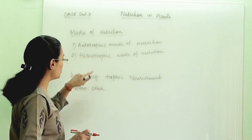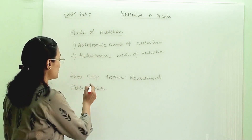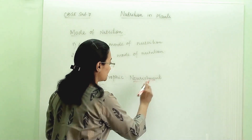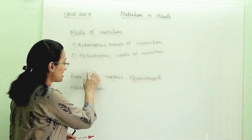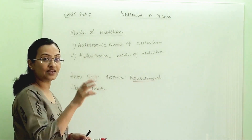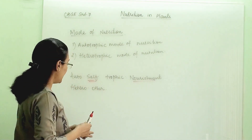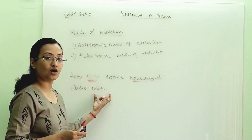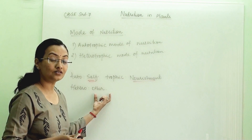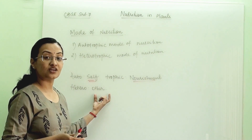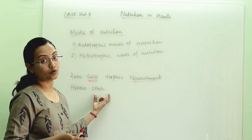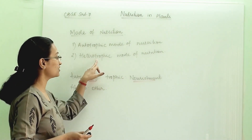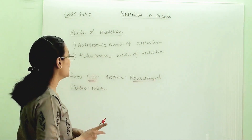Autotrophic mode means 'auto' means self and 'trophic' means nourishment, so they are preparing their own food. Hetero means they are depending upon other organisms for their food requirement — that mode is known as heterotrophic mode of nutrition.